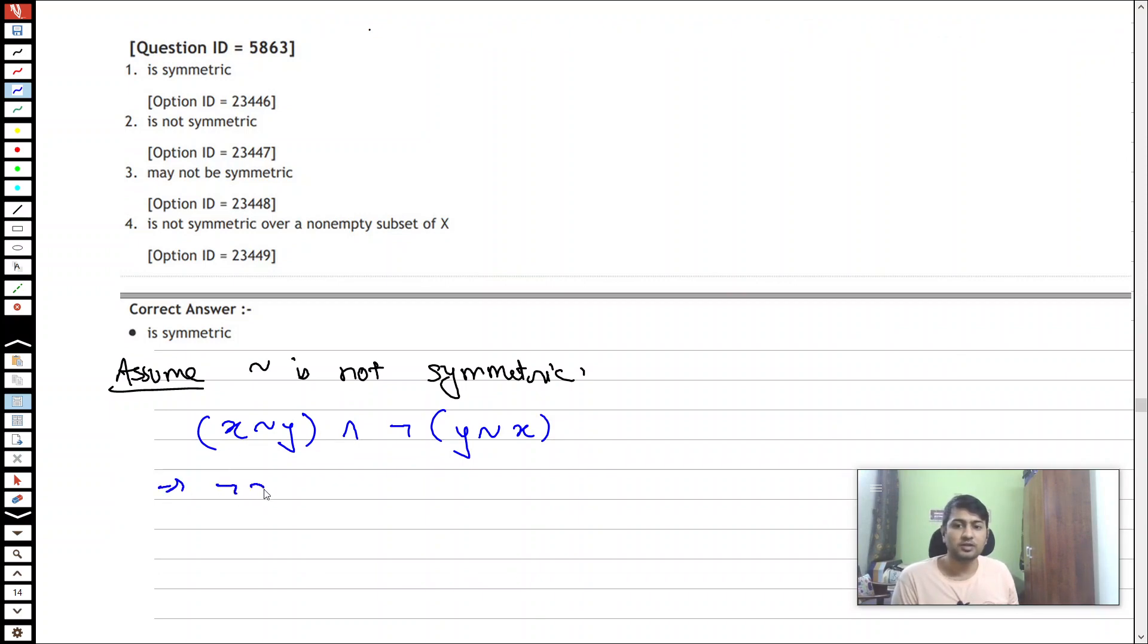So what x indifferent to y means is that you have negation of x preferred to y and negation of y preferred to x.